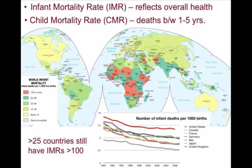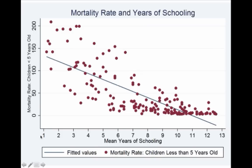The Child Mortality Rate, or CMR, is a recording of deaths of children between the ages of 1 and 5, and this remains notably high in much of Africa and Asia. You can see in this graph, with the x-axis showing mean years of schooling and the y-axis showing mortality rate, that less developed nations not only have inadequate schooling, but also inadequate medical care.